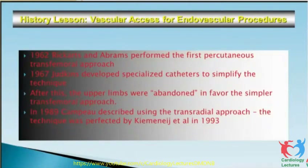In 1962, Richard and Abram performed the first percutaneous transfemoral approach. In 1967, Judkins developed specialized catheters to simplify the technique. After this, the upper limb was abandoned in favor of the simpler transfemoral approach. Again in 1989, Dr. Campeau from Canada described using the trans-radial approach.